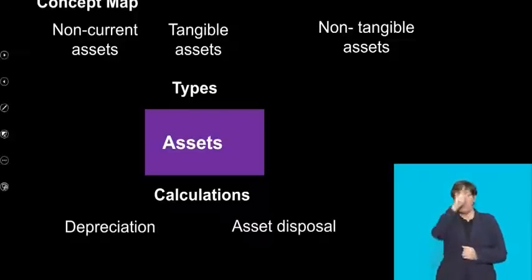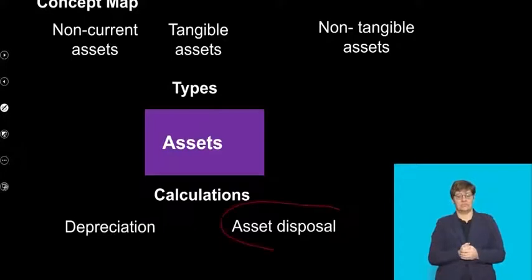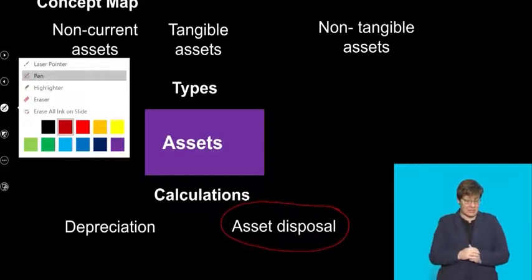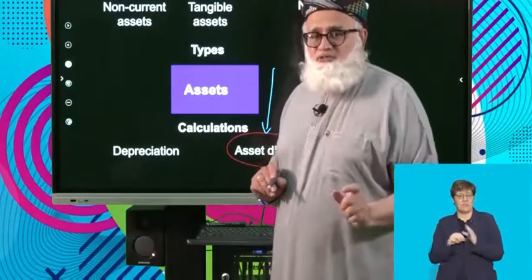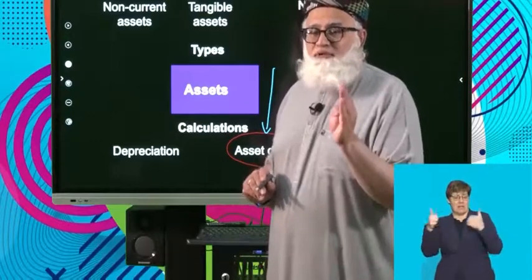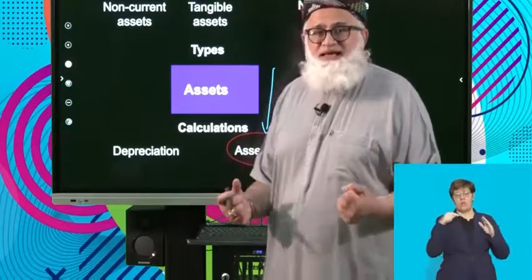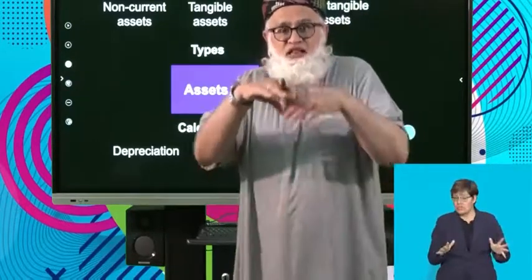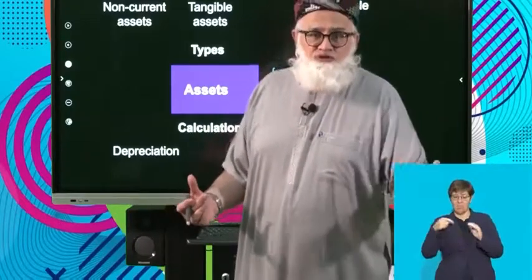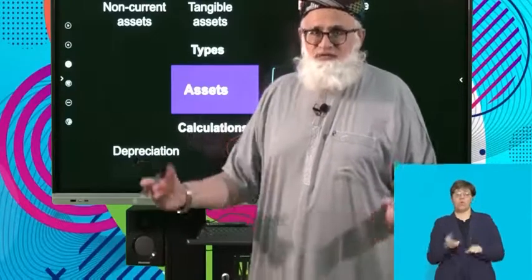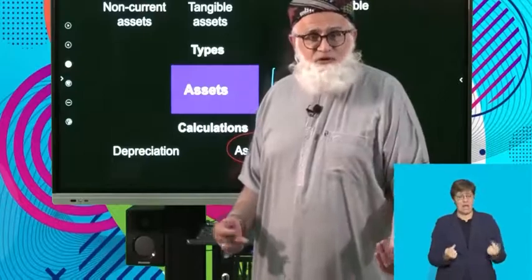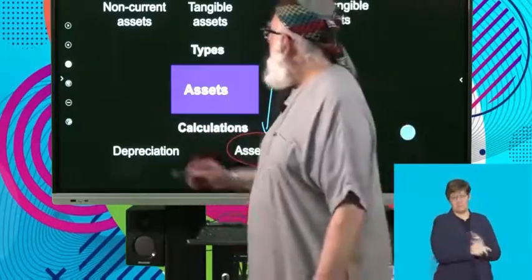Now remember what we said: when we're dealing with Asset Disposal, what is very important to take into consideration is that Asset Disposal is an interim nominal account. It's drawn up to determine the profit or loss on the sale of an asset. Once we've done that, it self-destructs — it closes — and the profit is then transferred to a profit on sale of asset account, or a loss on sale of asset account, depending on whether the selling price was greater than or less than the carrying value.